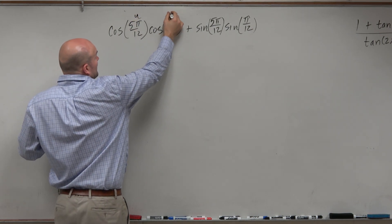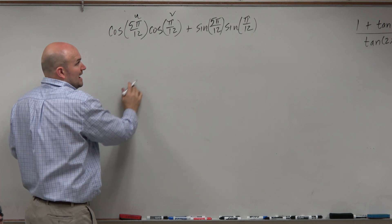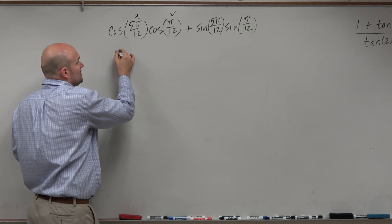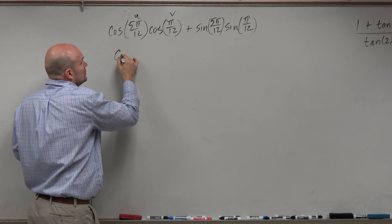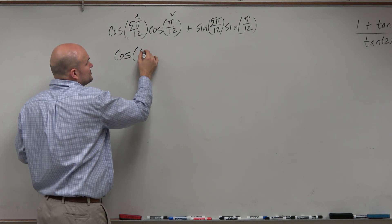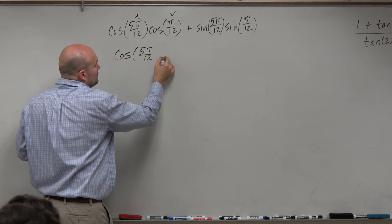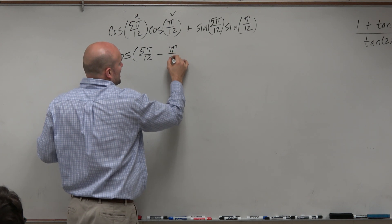Basically, this is your u, and that's your v. And therefore, if we're adding inside the formula, that means we are subtracting. So this is really cosine of 5 pi over 12 minus pi over 12.